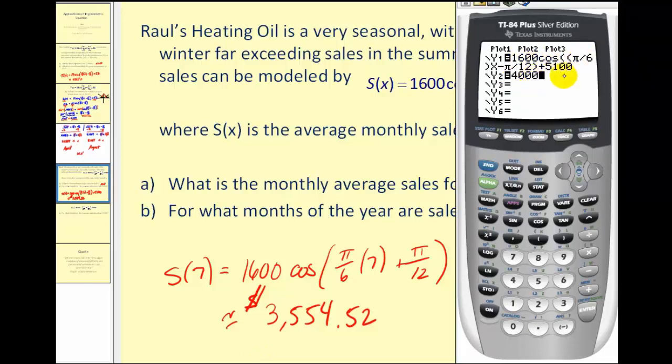If we press graph, you get a nice visual of how the sales are high in the beginning of the year, they go down in the summer, and then back up in the fall and winter. The sales would be below four thousand dollars in this interval here.